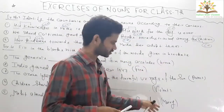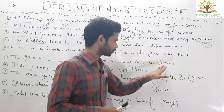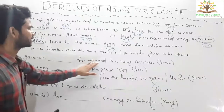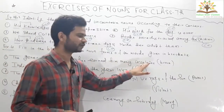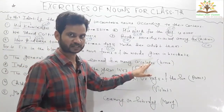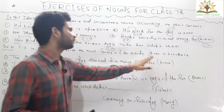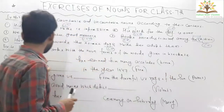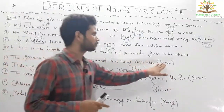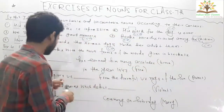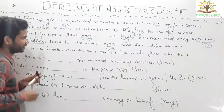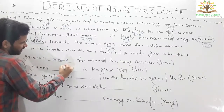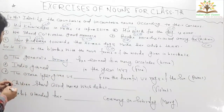Question one: 'The general's ___ has earned him many accolades.' Brave is given here as an adjective, and we need to put a noun. Through brave we can make bravery, and bravery is an abstract noun. So the answer is bravery.